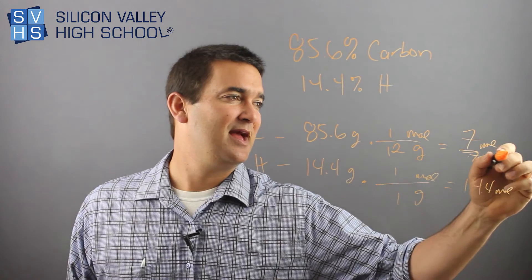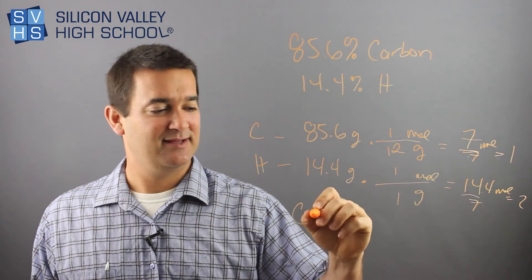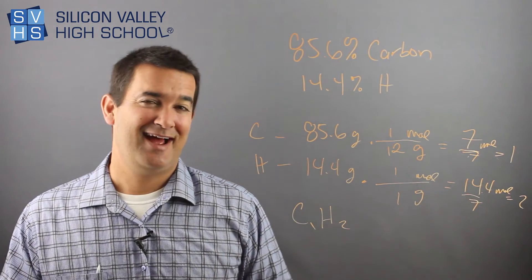Divide him by seven. Divide him by seven. And you get one, divide him by seven and you get two. So you have CH2. Normally you don't write that C one. And that's it.